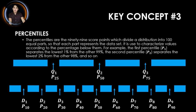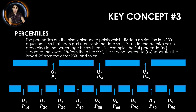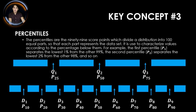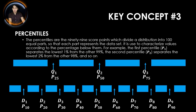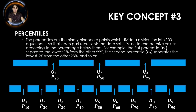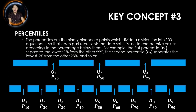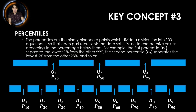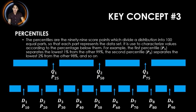On the other hand, deciles divide the data into 10 equal parts. D sub 1 is the same as P sub 10, which is the 10% of the data. D sub 2 is the same as P sub 20, representing 20% of the data, and so on up to D sub 9, which is the same as P sub 90, representing 90% of the data. The difference between quartile, decile, and percentile is that decile is more specific than quartile, but percentile is the most specific of all since it divides the data by one.